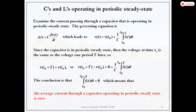In all DC-DC converters you will see at least one capacitor, one inductor, one control switch, and one diode — these four components are the minimum requirement. In some converters, two inductors and two capacitors are used.